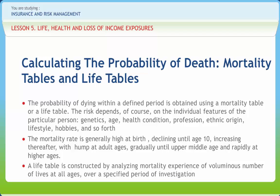However, this method cannot be followed in mortality study as it is time-consuming. Observations have to be continuously made over a very long period and would also be subject to fluctuations due to secular trends in mortality over time. Hence, what is done is to collect voluminous data from life insurance companies containing lives at different ages at the start of an investigation. Mortality experiences of these lives at different ages are studied over a short period — say, five years — arriving at crude death rates for different ages. These rates are graduated to obtain a set of smooth rates in a life table.